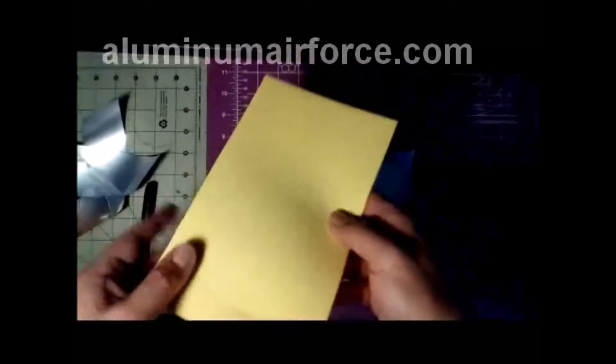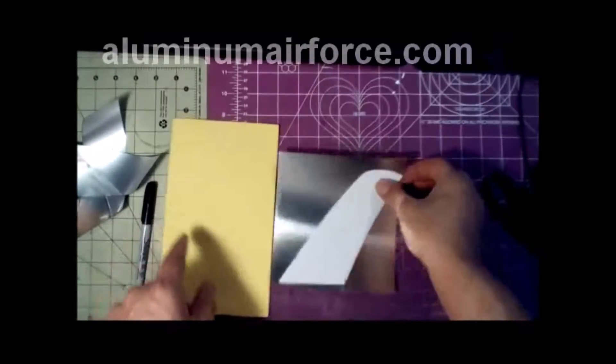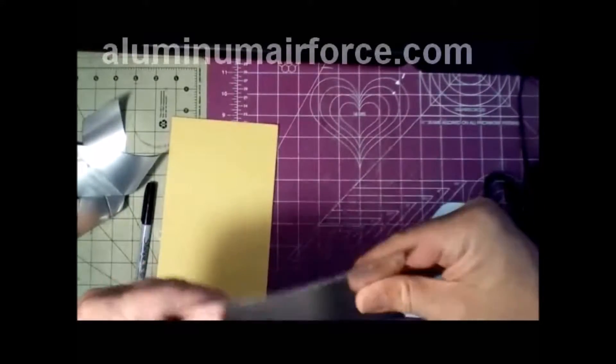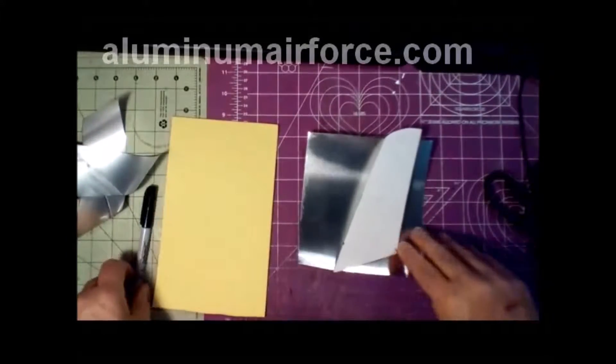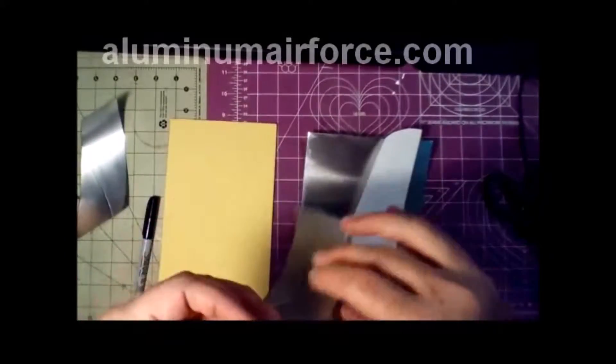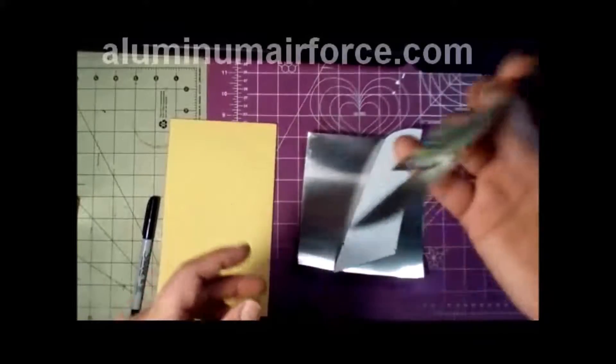We have our Darice Craft Foam here. Normally I use white when I'm working with silver wings. We have our aluminum sheeting. This piece is a little bit too thick. We'll show you why later on in the video. And we also have our F-86 Sabre wings that we cut out of can. We'll set those aside for now.